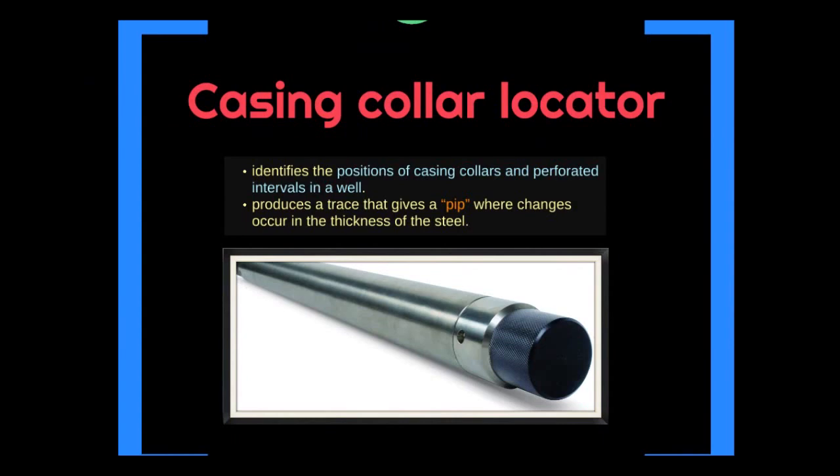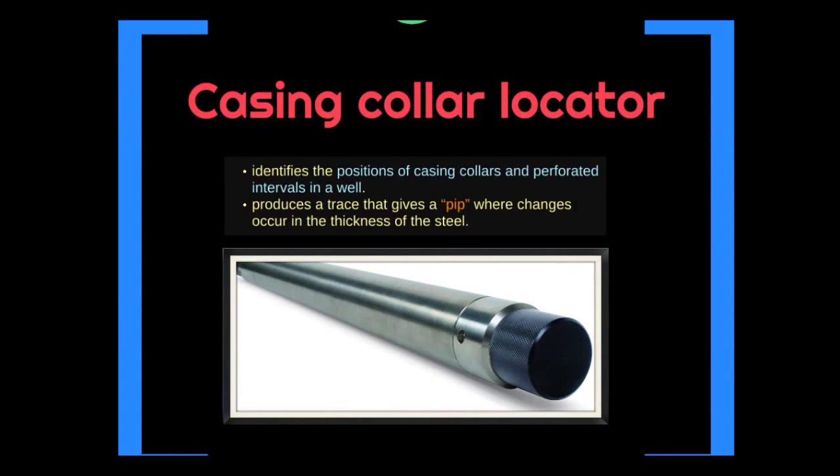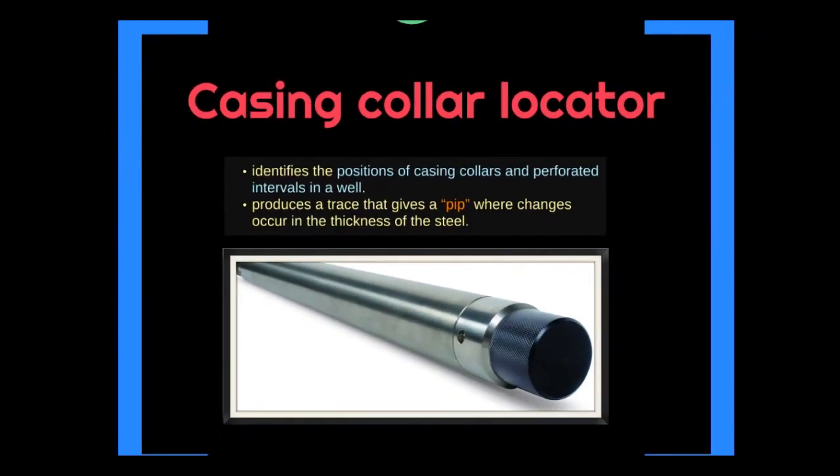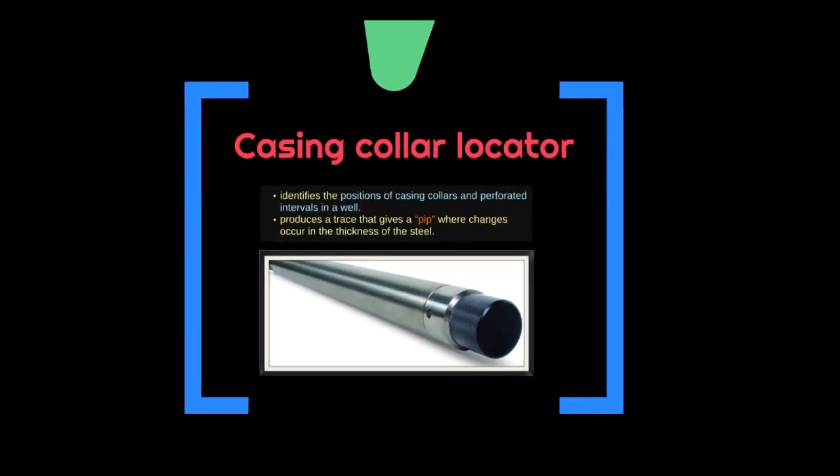Casing collar locator: A downhole tool used to confirm or correlate treatment depth using known reference points on the casing string. The casing collar locator is an electric logging tool that detects the magnetic anomaly caused by the relatively high mass of the casing collar. A signal is transmitted to surface equipment that provides a screen display and printed log enabling the output to be correlated with previous logs and known casing features, such as pup joints installed for correlation purposes.